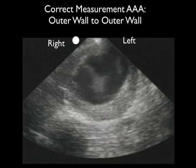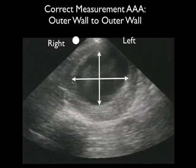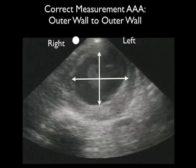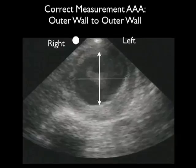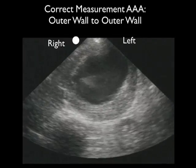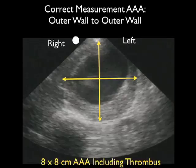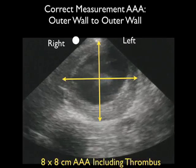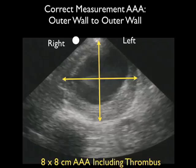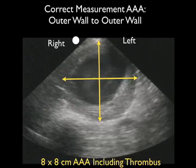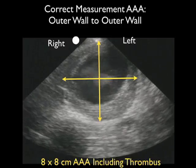It's also very important to include outer wall to outer wall in the measurements of the abdominal aortic aneurysm. Here we can see a measurement including only the inner lumen — notice that we could vastly underestimate the true diameter of this very large AAA. The correct measurement includes the anterior, posterior, and lateral dimensions, including the thrombus that coats the outer walls in addition to the true lumen, giving us a measurement of 8 by 8 centimeters on this AAA.